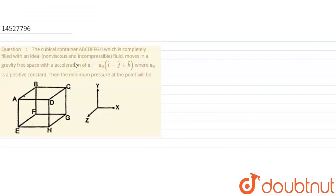So the question is: a cubical container A, B, C, D, E, F, G, H, which is completely filled with an ideal liquid — non-viscous and incompressible fluid — moves in a gravity-free space with an acceleration A₀ (î minus ĵ plus k̂), where A₀ is a positive constant. Then the minimum pressure at which point will be?